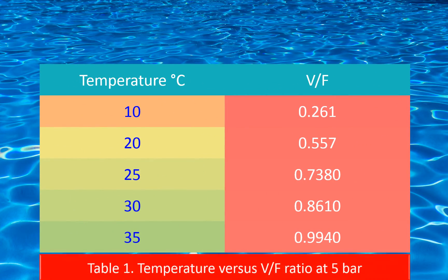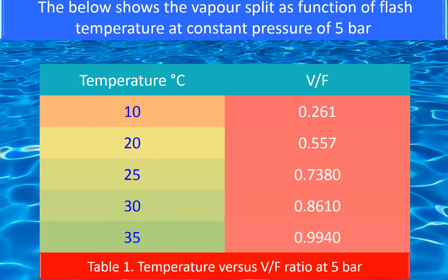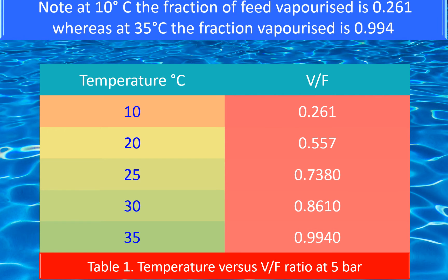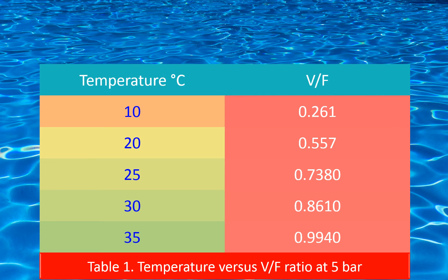The table below shows the vapor split as a function of flash temperature at a constant pressure of 5 bar. Note that at 10 degrees centigrade, the fraction of feed vaporized is 0.261, whereas at 35 degrees centigrade, the fraction vaporized is 0.994.